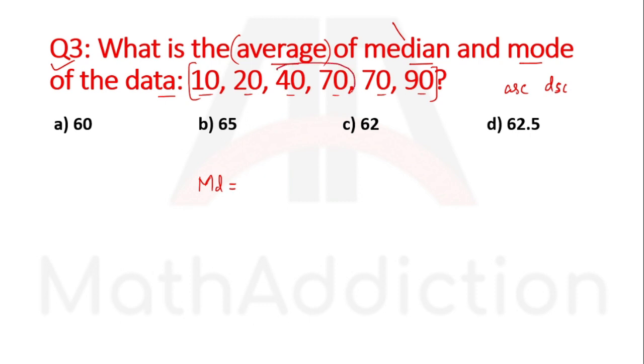The center values are 40 and 70. When there are two center values, we take their average. So median equals 40 plus 70 divided by 2, which equals 55.